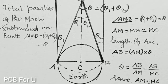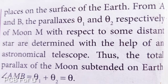That is the sum of these two angles theta1 and theta2. The angle AMB equals theta1 plus theta2. So, the parallax angles theta1 and theta2 are added together.